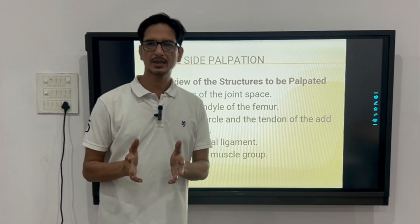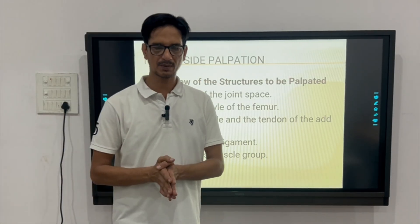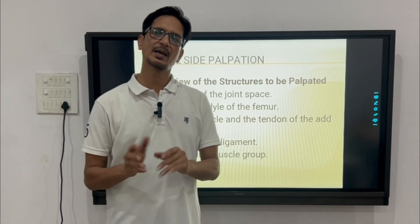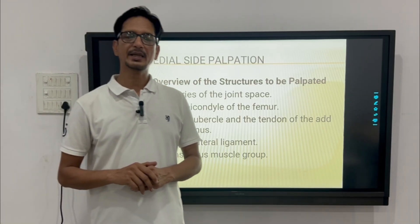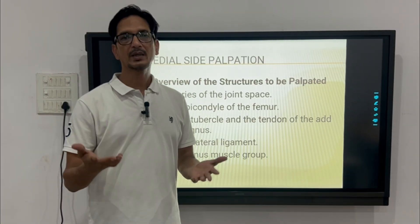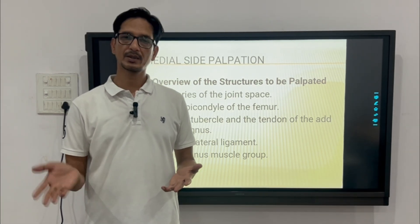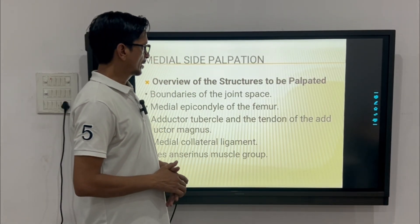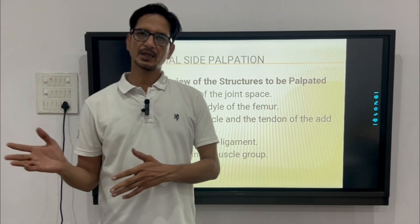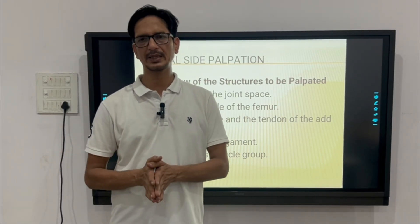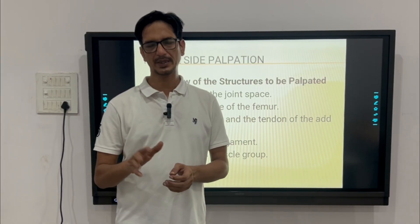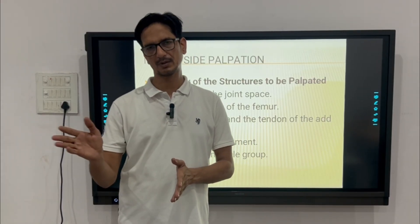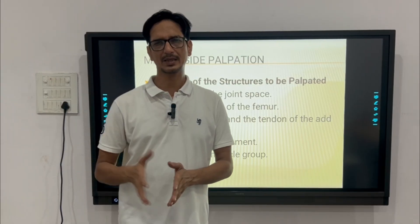First, we have to discuss the position of the patient. The patient position remains the same as in anterior knee palpation — the patient should be in a sitting position on a treatment couch or a raised stool. The therapist can remain on any side, but the more convenient position is in front of the patient, slightly to the lateral side when palpating the medial aspect, as this facilitates the palpation.